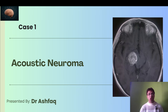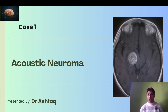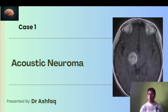Acoustic neuromas are also called schwannomas, especially vestibular schwannomas — vestibular because they lie in relation to the eighth cranial nerve, the vestibulocochlear nerve, especially its superior division. They are usually solitary, but in conditions like neurofibromatosis type 2, we see bilateral acoustic schwannomas — a classic feature of NF2.